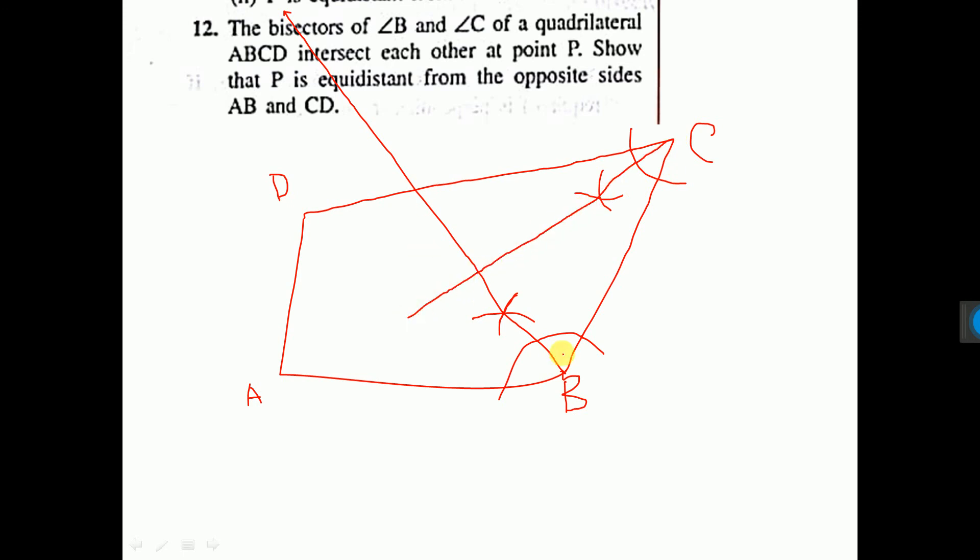These two lines intersect at the point what it is given in the question? P. At the point P. Very good. That P is equidistant from opposite side AB and CD. So opposite side AB is this one and CD is this one. Okay?